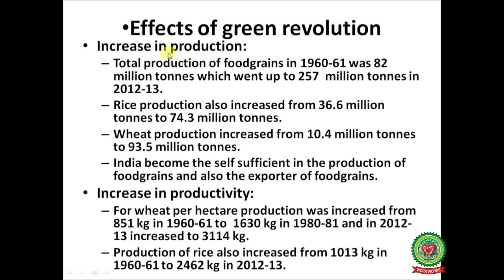Effects of Green Revolution — increase in production: total production of food grains in 1960–61 was 82 million tons, which went up to 257 million tons in 2012–13. Rice production increased from 36.6 million tons to 74.3 million tons, and wheat production increased from 10.4 million tons to 93.5 million tons. India became self-sufficient in food grains and also became an exporter.